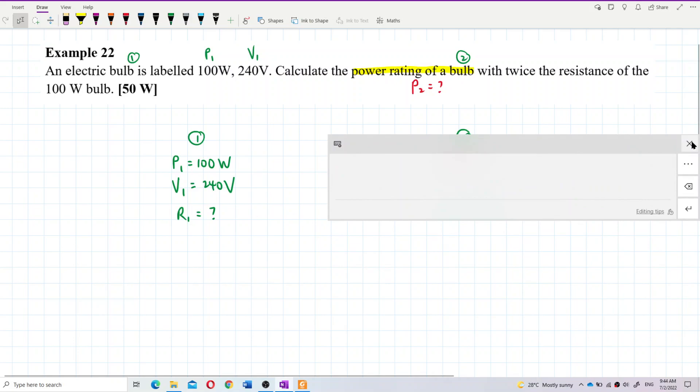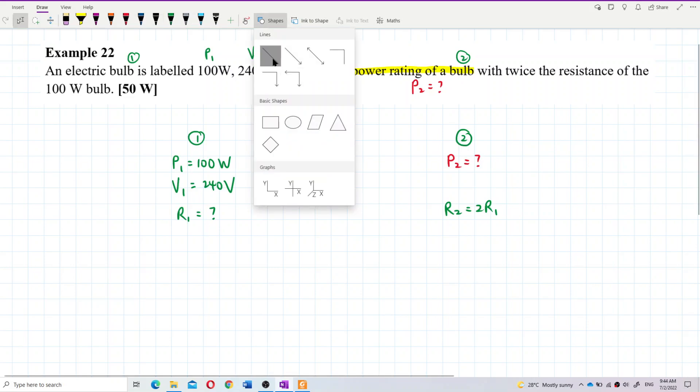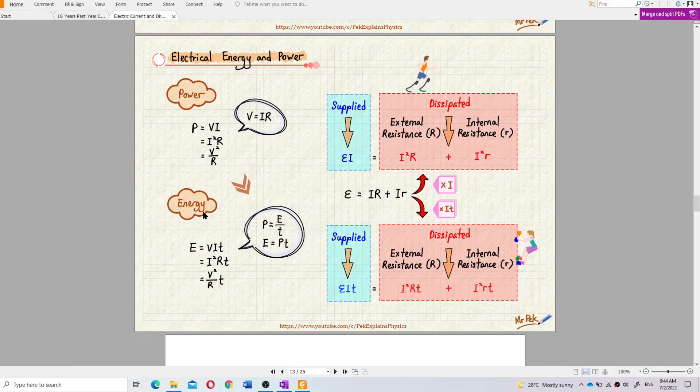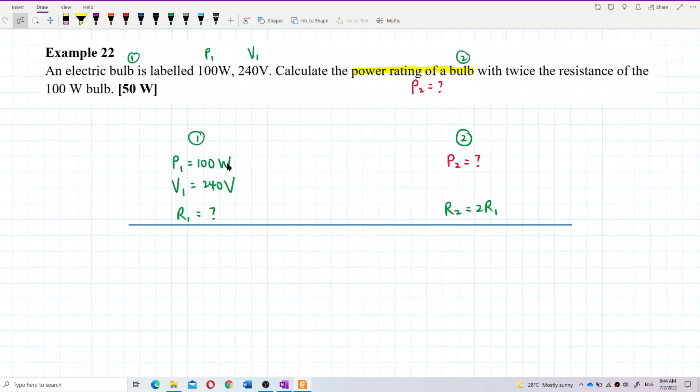So how to do these questions? Let's work it out. I think here we can use the formula, power equal to V square over R, to get resistance 1. Just remember that power is VI, power is also I square R, and power is V square over R. You can use any of these three. Look at which one is appropriate, then you use that formula.